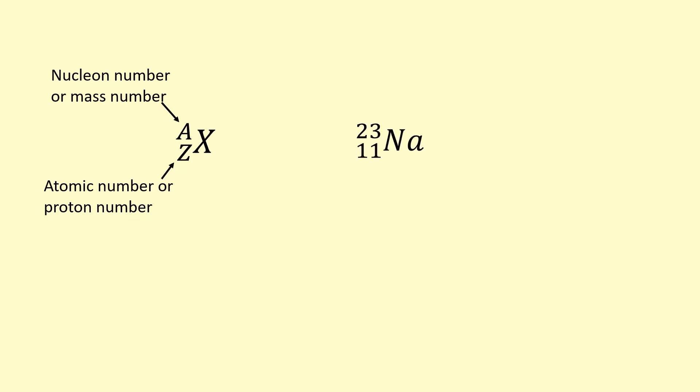So here's an example. This is sodium-23. The 23 means there are a total number of protons plus neutrons added together, so there's 23 of them. The 11 represents the number of protons. So we can do the math: 23 minus the 11 means that there's 12 neutrons inside this nucleus.